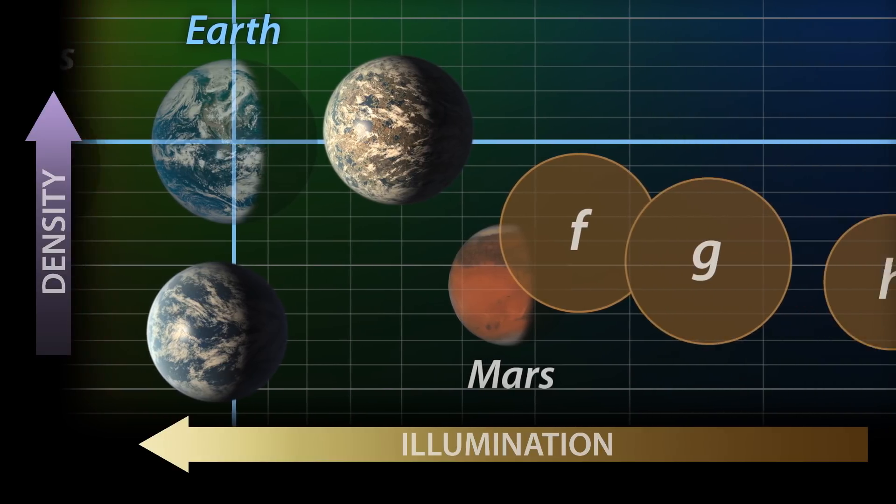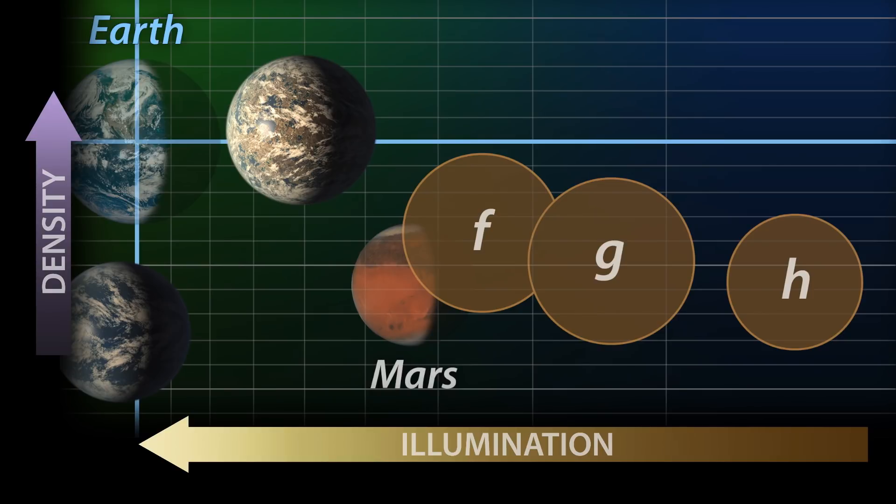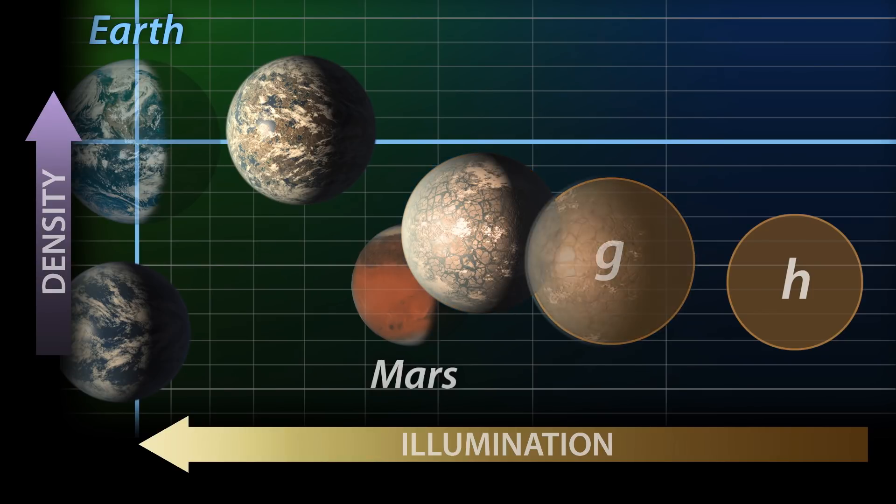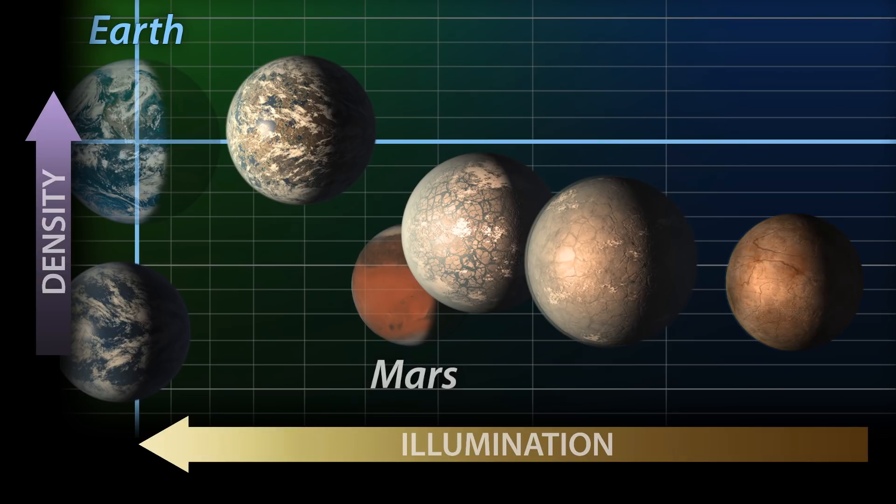The outer planet densities are a little higher, but still low compared to Earth. This could indicate significant amounts of water, probably more in the form of ice as they get colder.